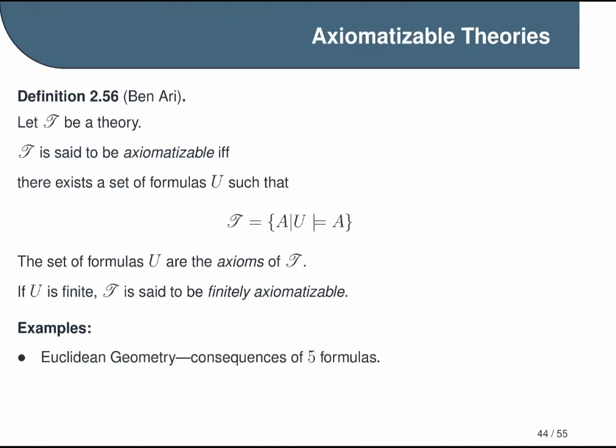For example, Euclidean geometry is a set of statements that are the logical consequence of five formulas. Peano arithmetic, which is one way of expressing the foundations of arithmetic that you're familiar with, is axiomatizable, but not finitely axiomatizable. It uses an inductive method to produce an infinite number of axioms.